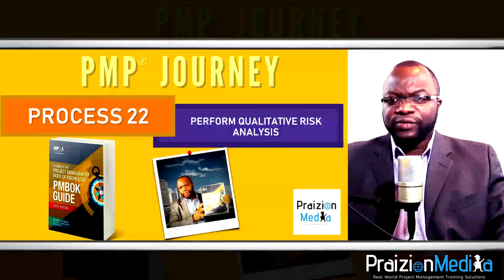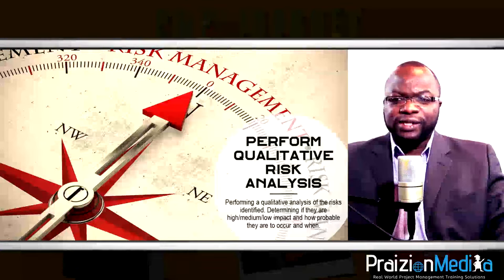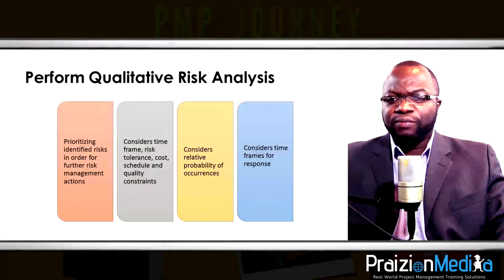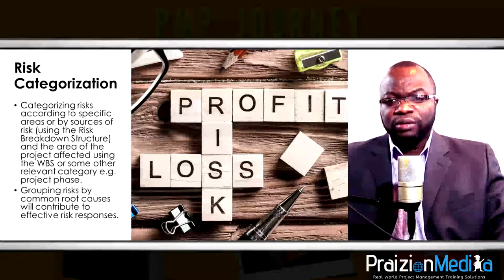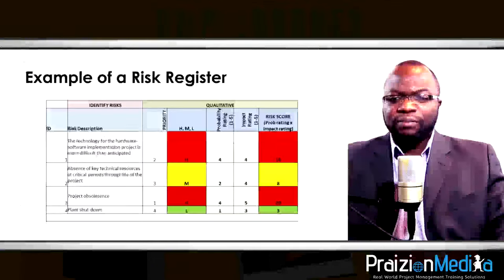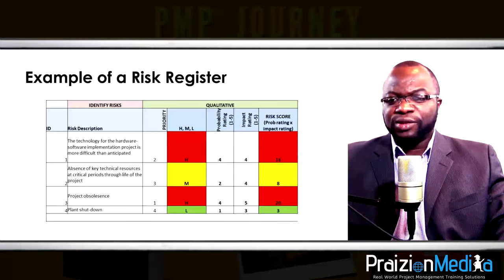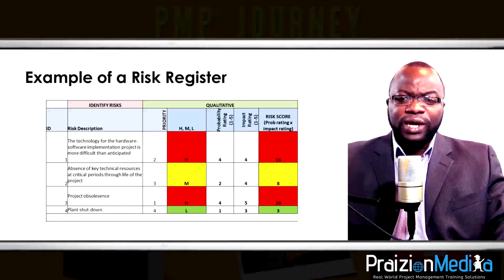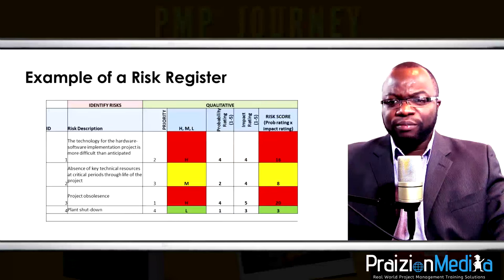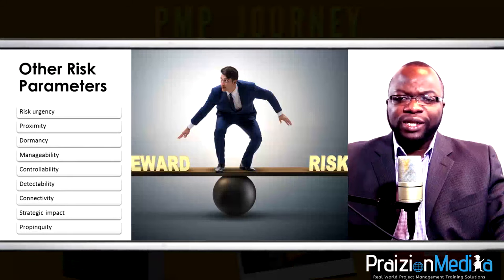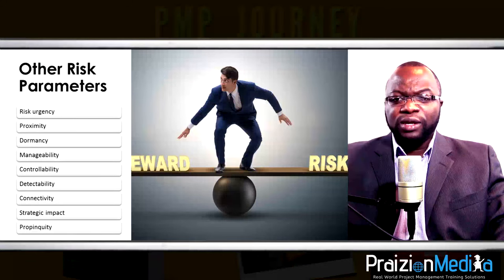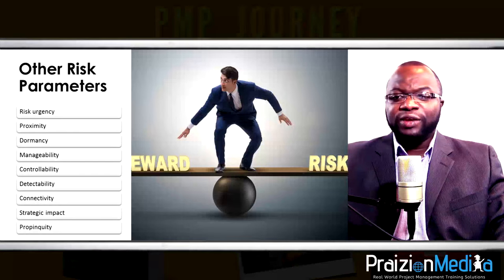Process 22: Perform qualitative risk analysis. Your main aim is to rank risks from top to bottom. You could rank them by probability, by impact, or hybridize by multiplying: on a scale of 1 to 5, probability 3 times impact 4 equals a risk score of 12. You also think about risk urgency assessment — what do we really need to take care of today — as well as risk propinquity and risk proximity.